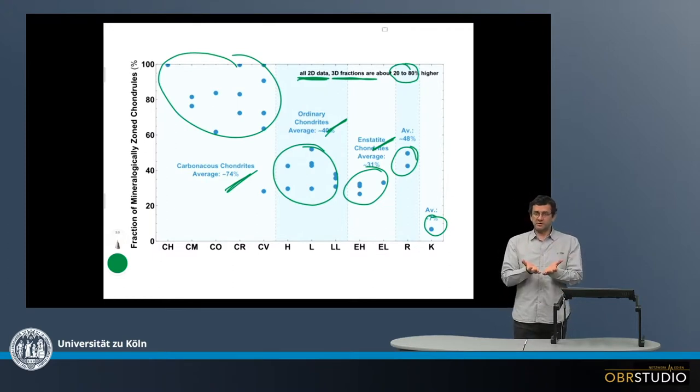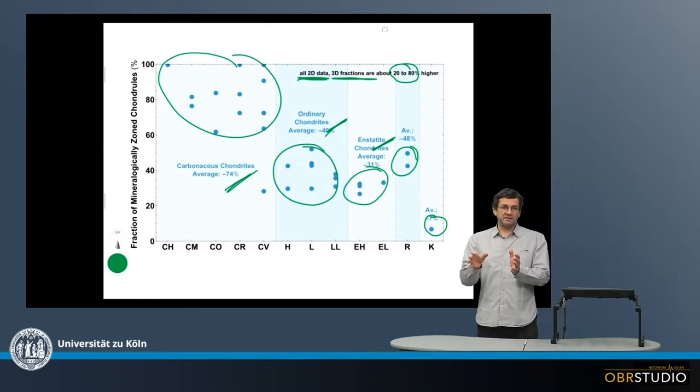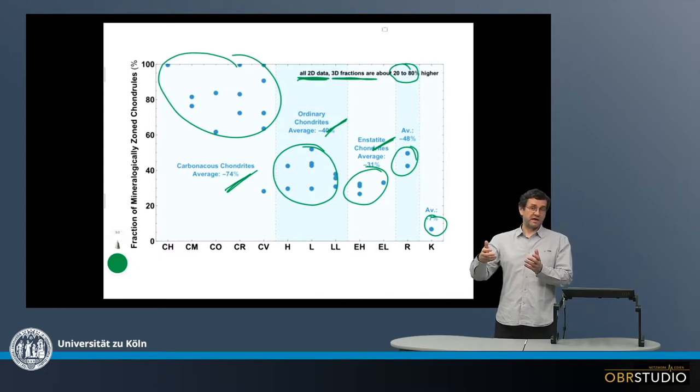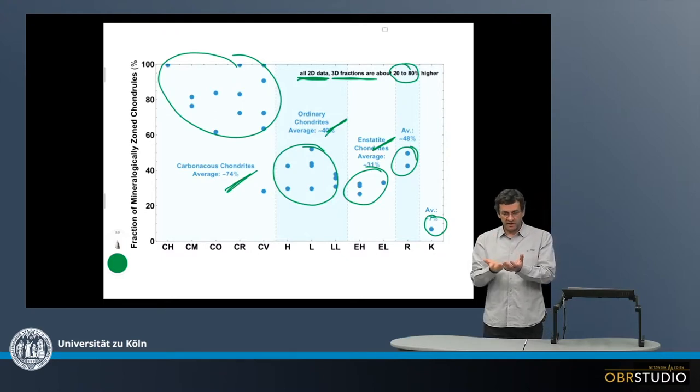This mineralogical zonation most likely is the result of a gas-melt interaction of the chondrules with the ambient gas while the chondrules form. So there is olivine in the core, or an olivine melt, that interacts with the surrounding gas which is SiO-rich. And by the reaction with the gas, the pyroxene forms.